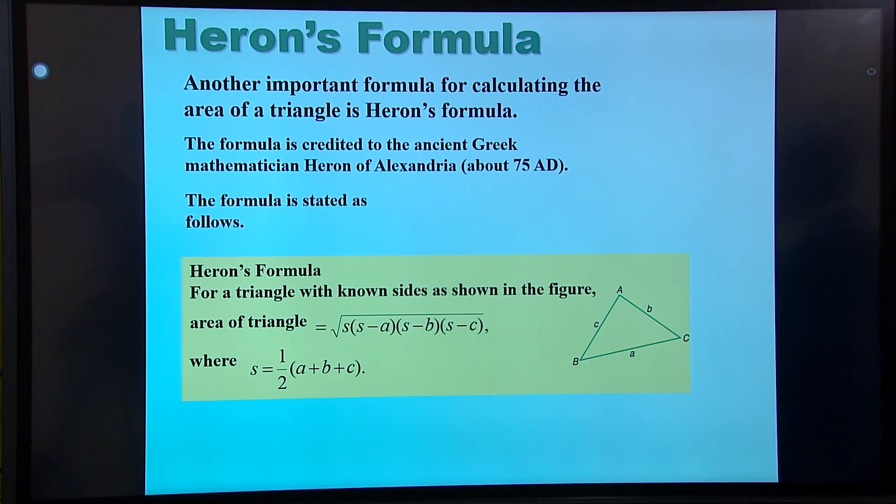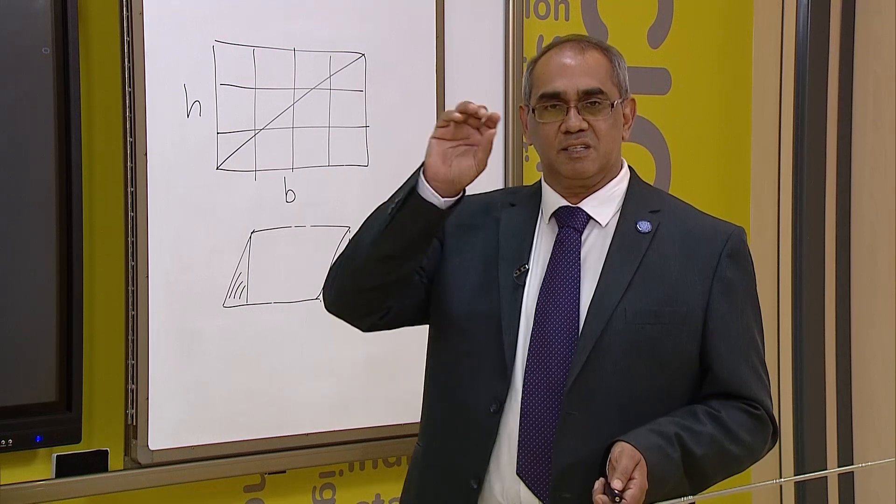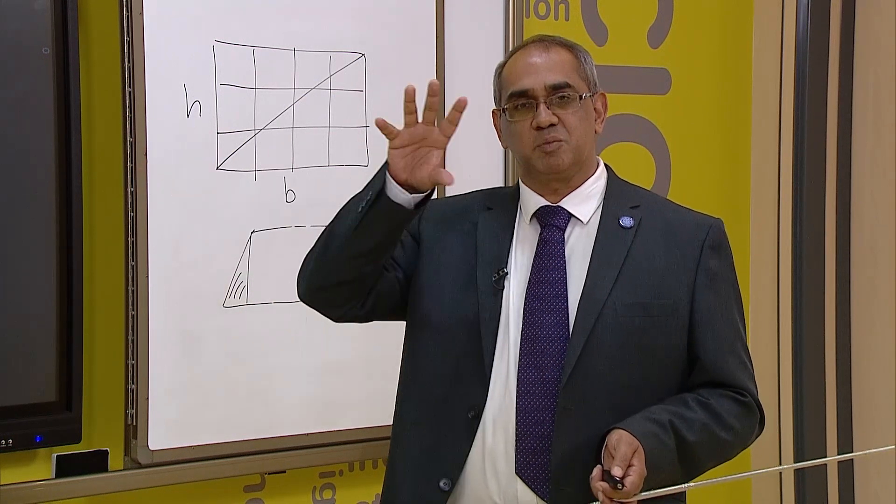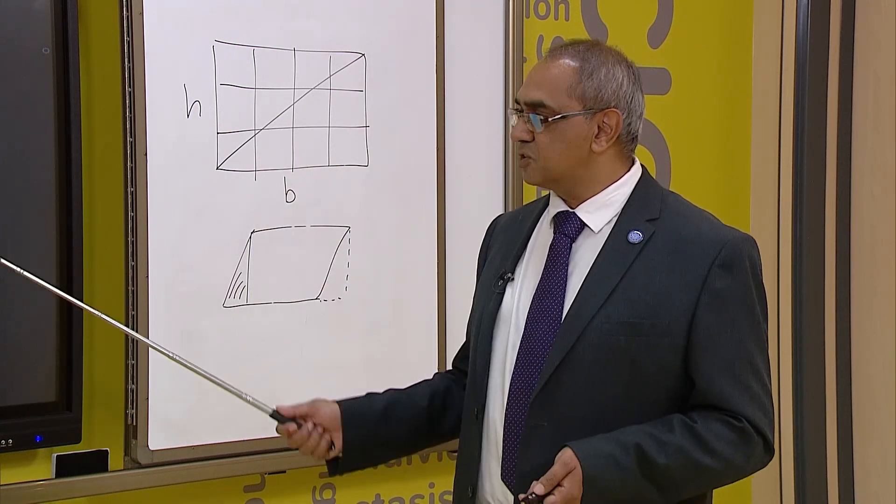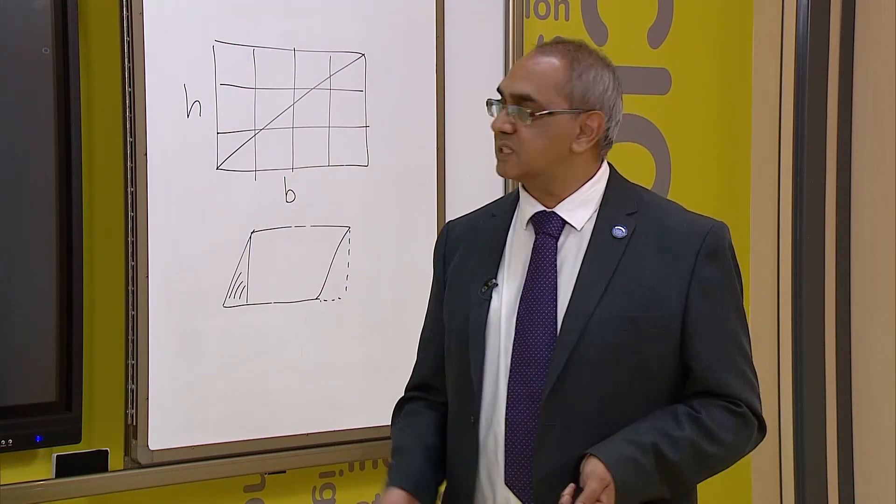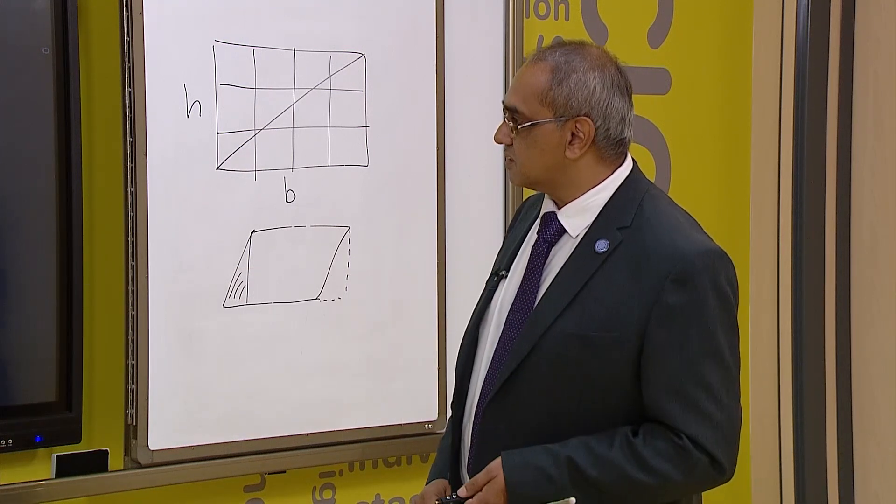If I think of Heron's formula, I know it's a square root. How do I put the terms inside? s minus a, s minus b, s minus c, times s. And you can substitute those values and work out what the area of a triangle is.